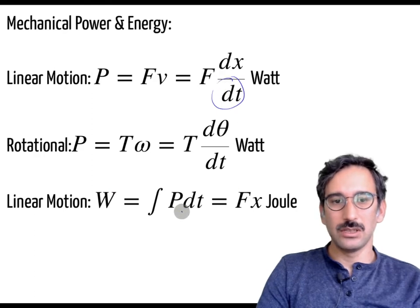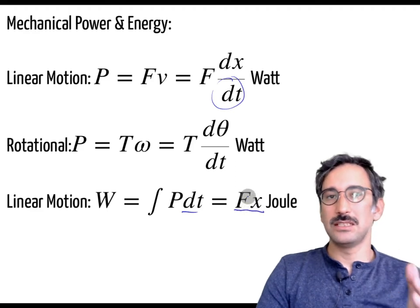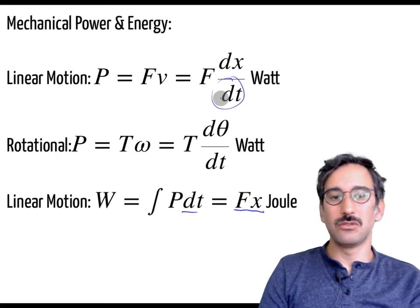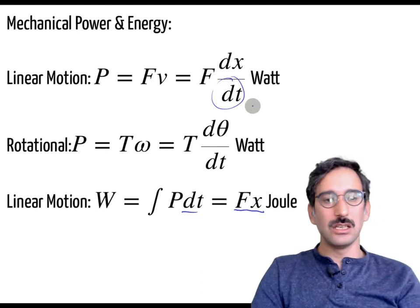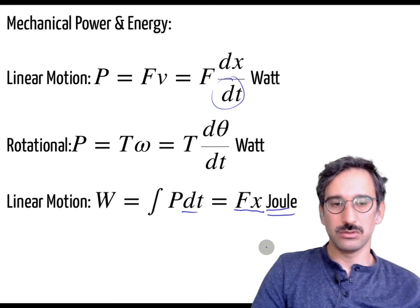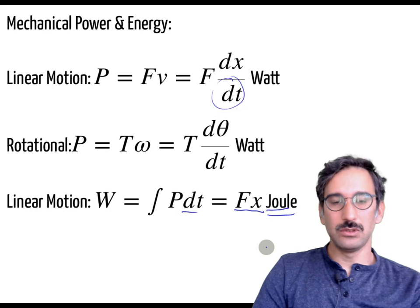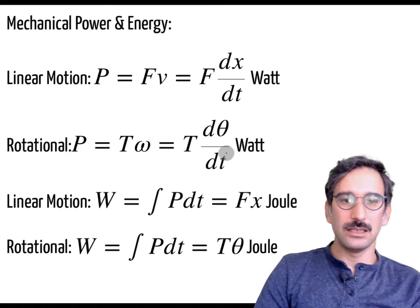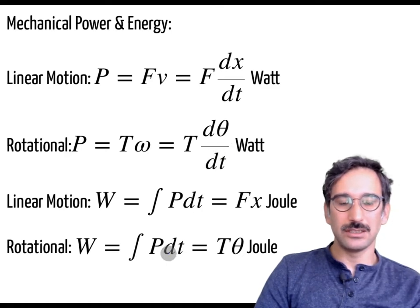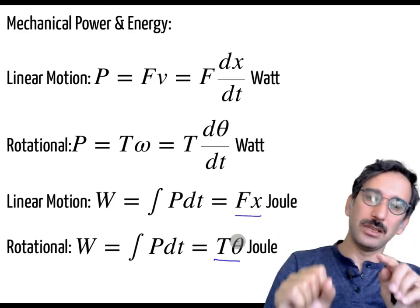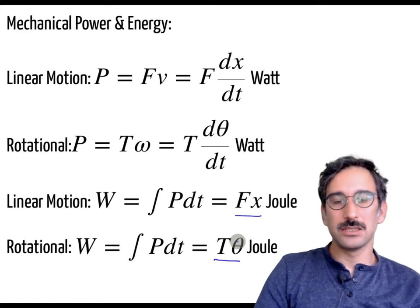If you integrate power over time, the dt terms cancel and you obtain force times displacement — that is, if you push something over some distance, you get joules. The same applies to rotational systems: integrating torque over rotational displacement also gives joules. So joules is energy and watts is power in both cases.